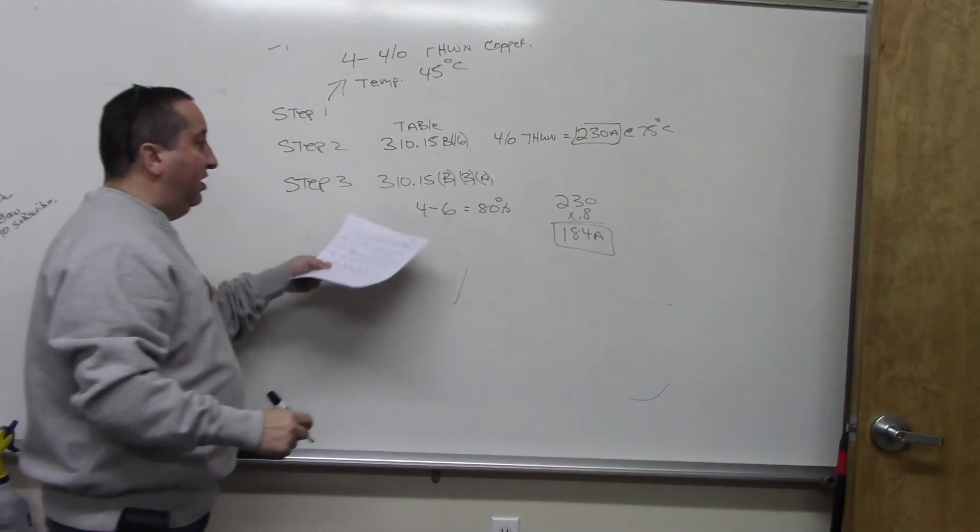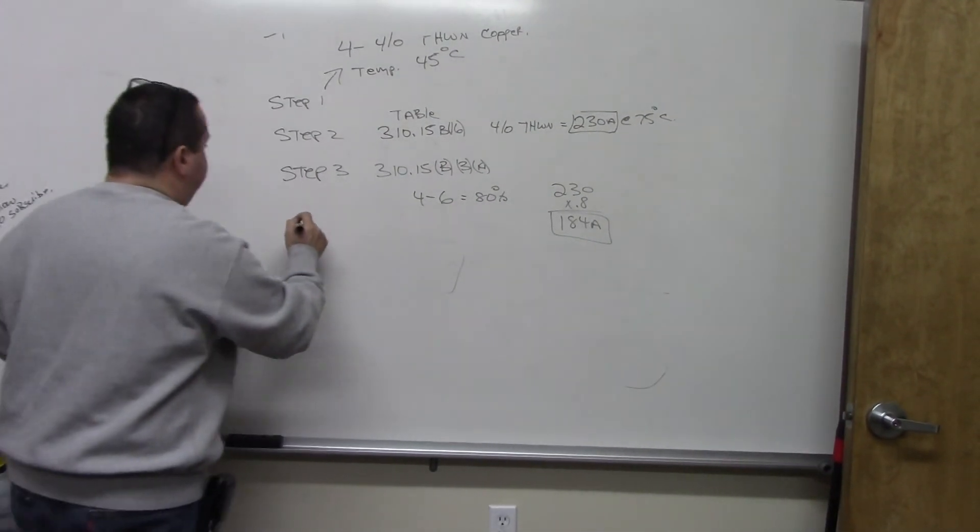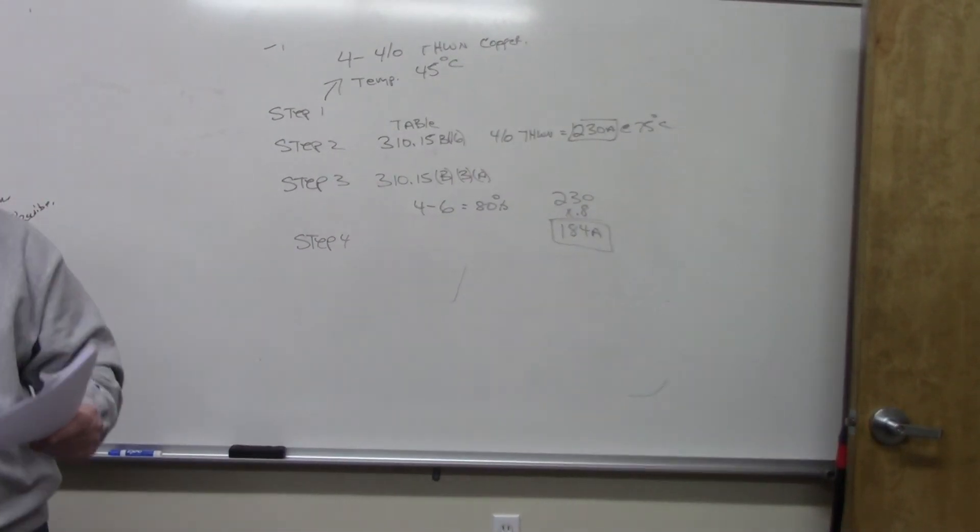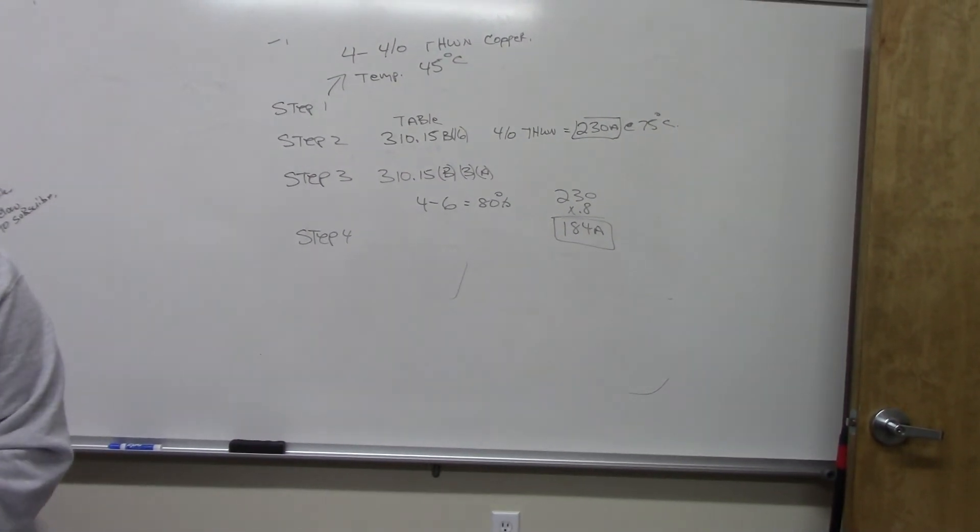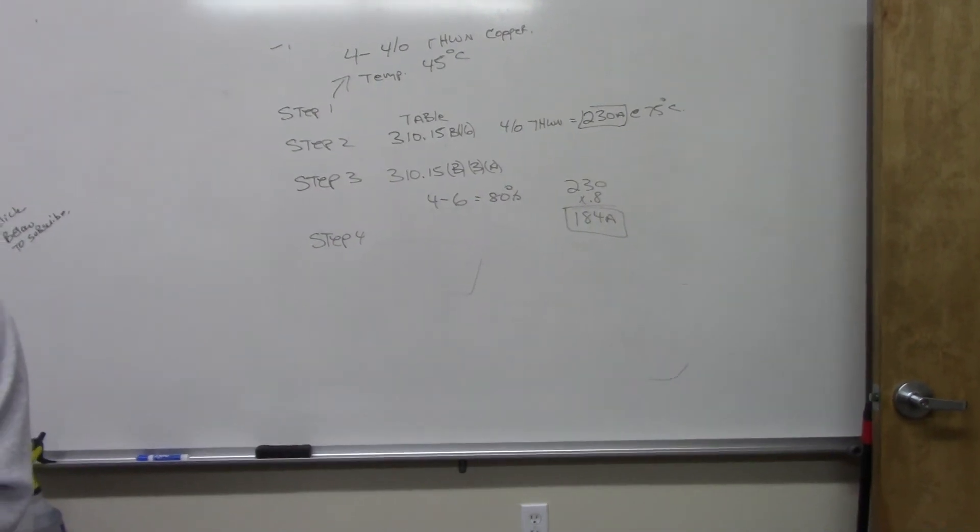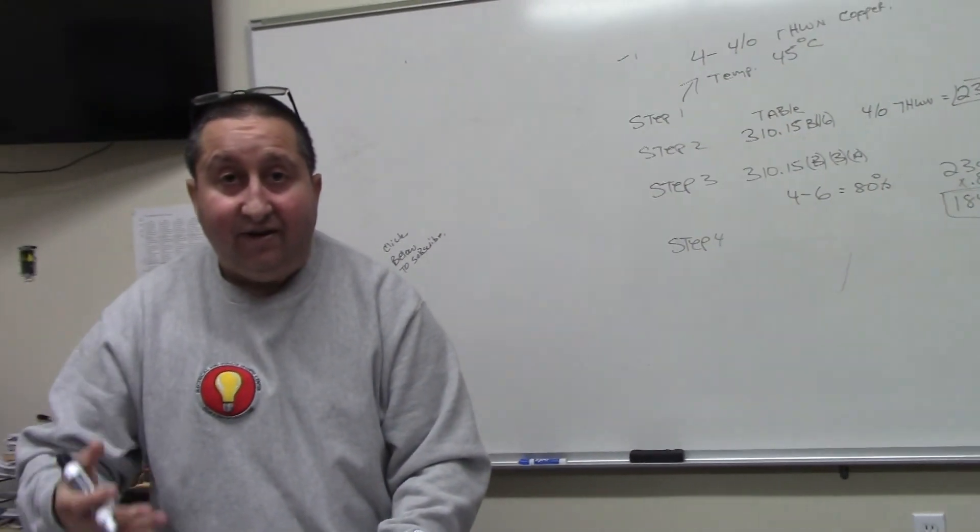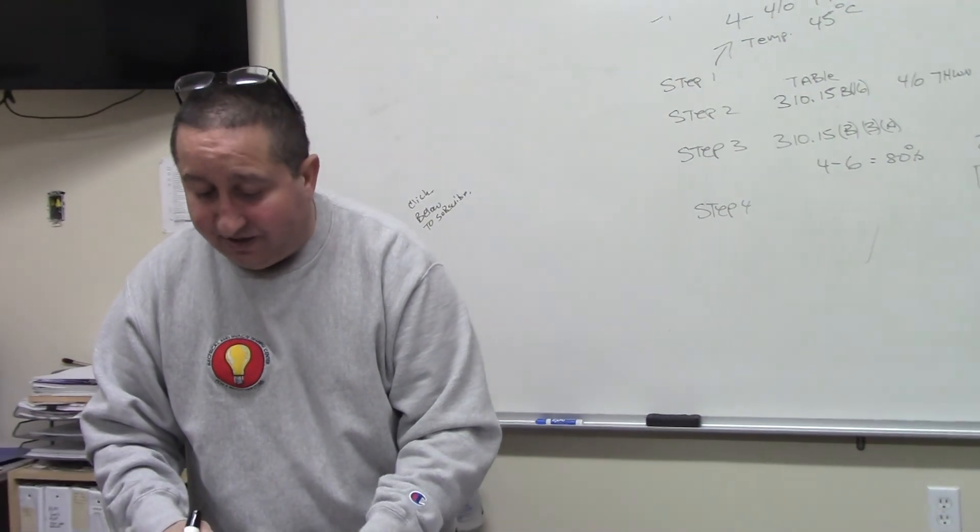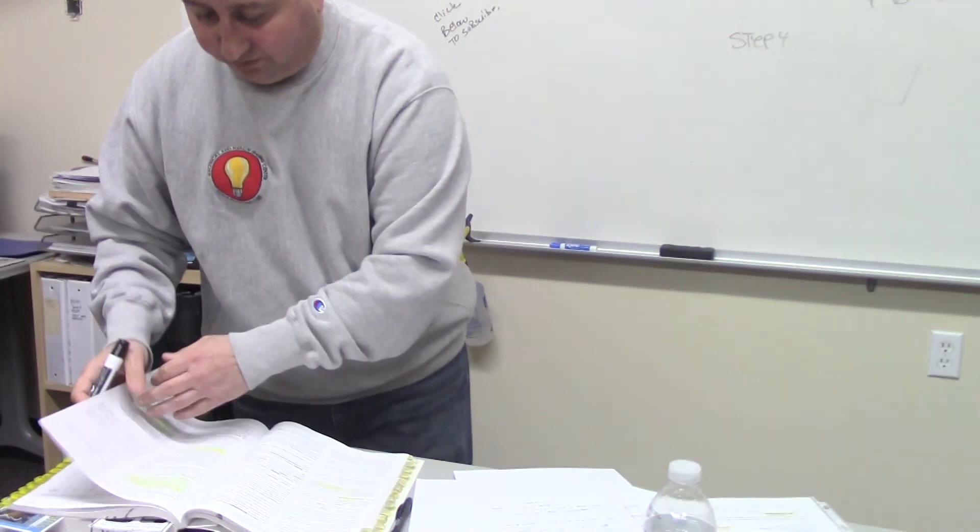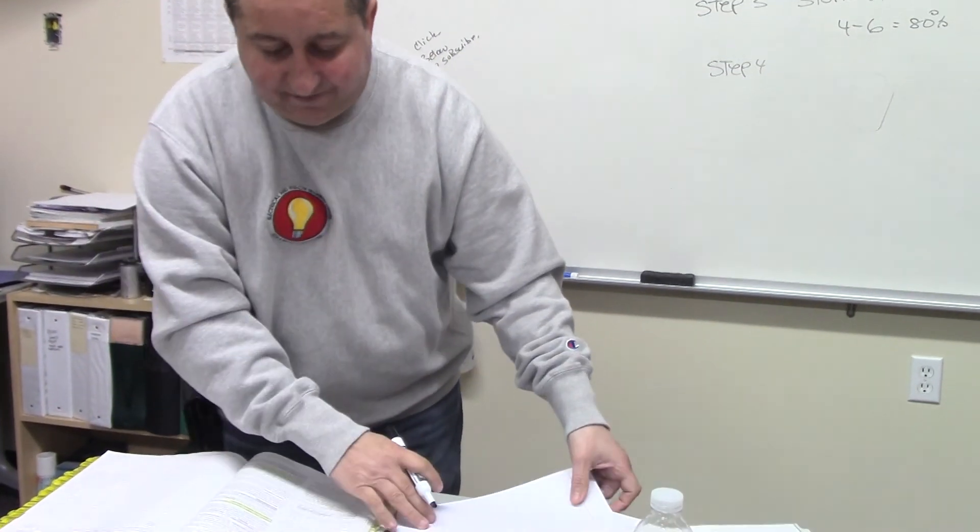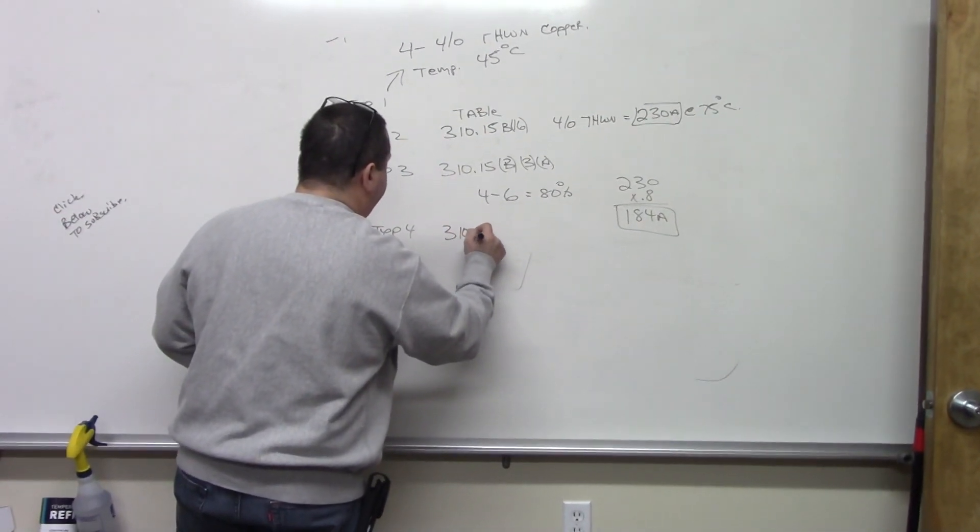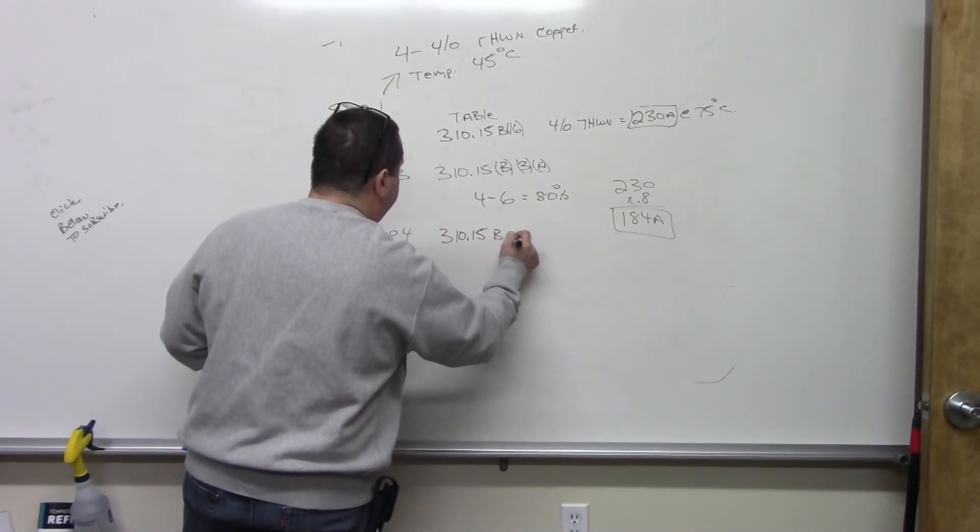That's for the current carrying conductors. Then in step four, we're going to go into the code book. Table 310... and you know what the problem is, every code cycle, they keep changing it on me. So here, it's Table 310.15B2A. We're going to go to 310.15B2A.